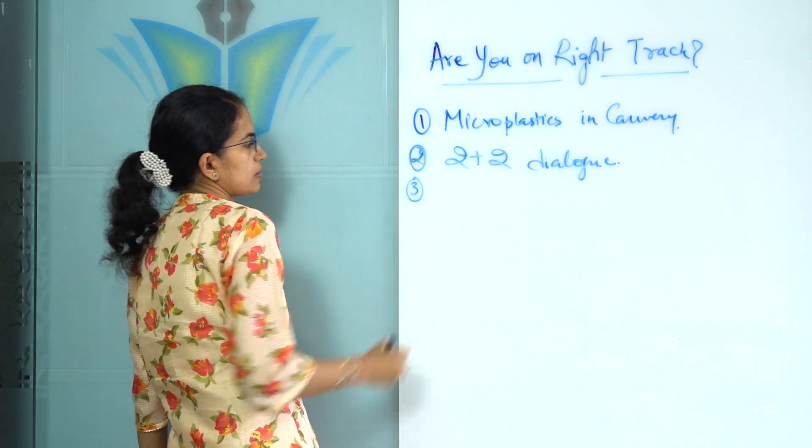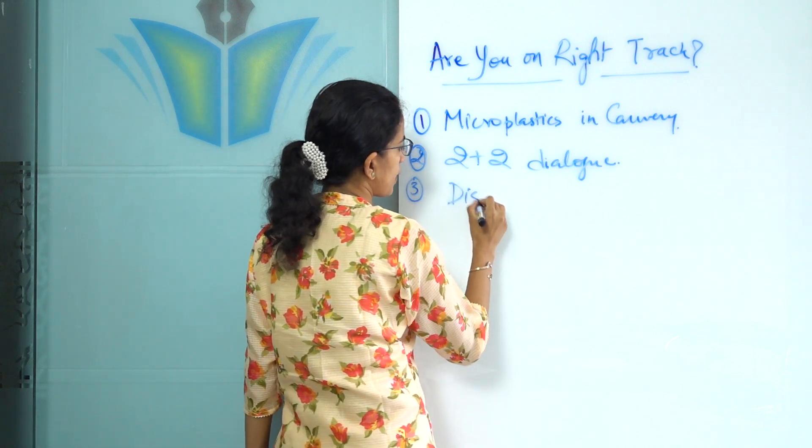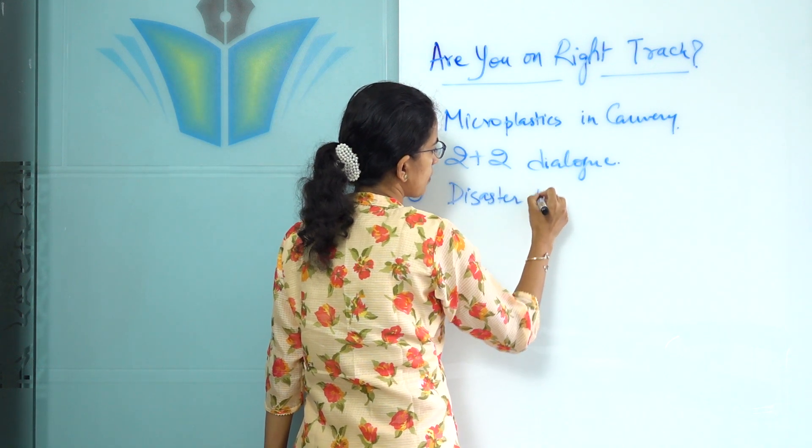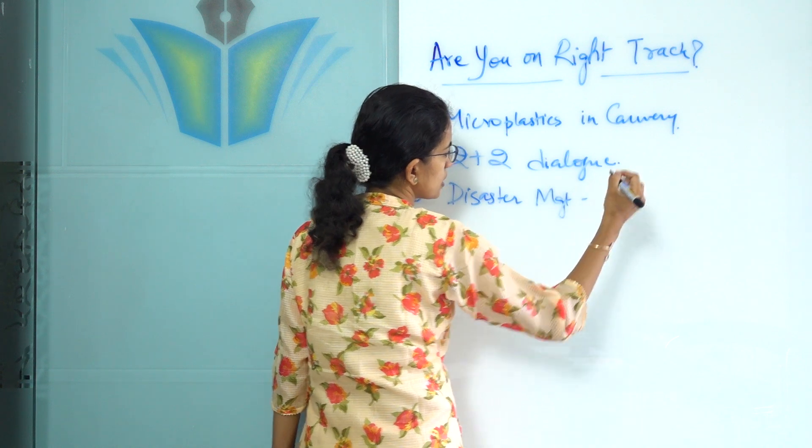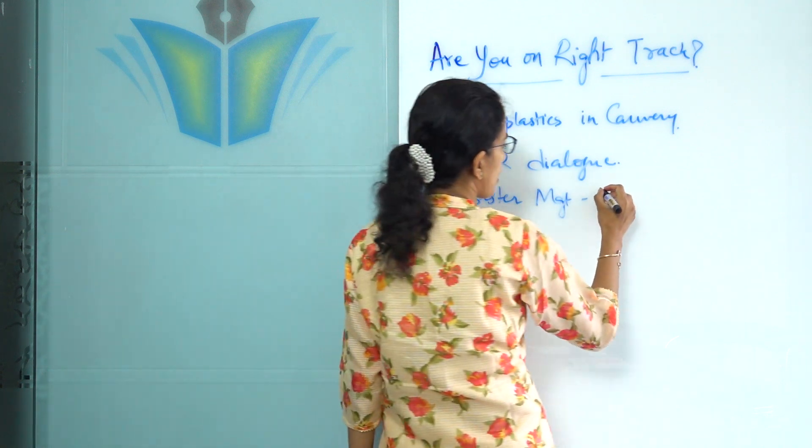The third important topic is disaster management. Now disaster management in light of the incidents at Trikut mountain, and what we need to understand is the basics behind the proper management and surveillance.